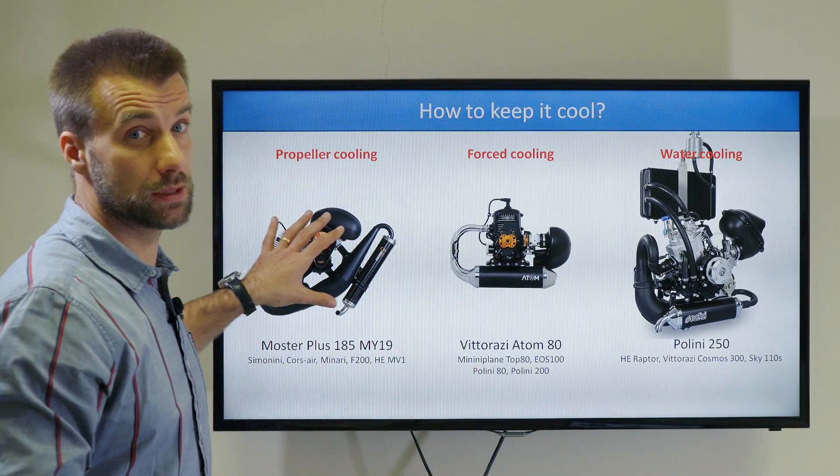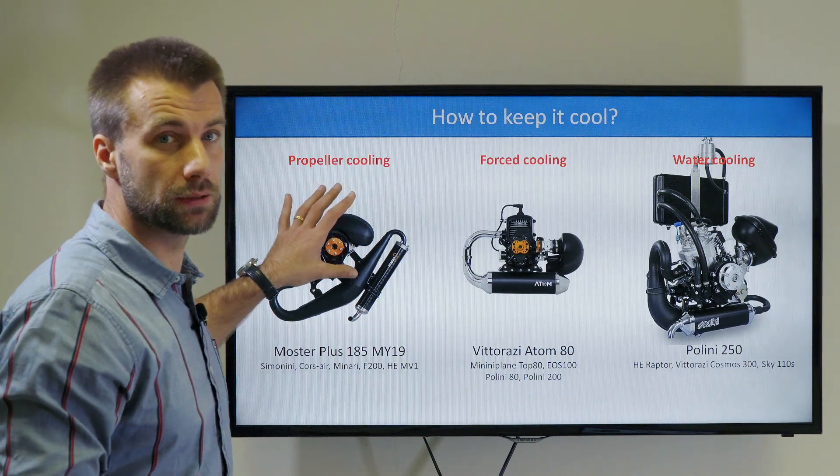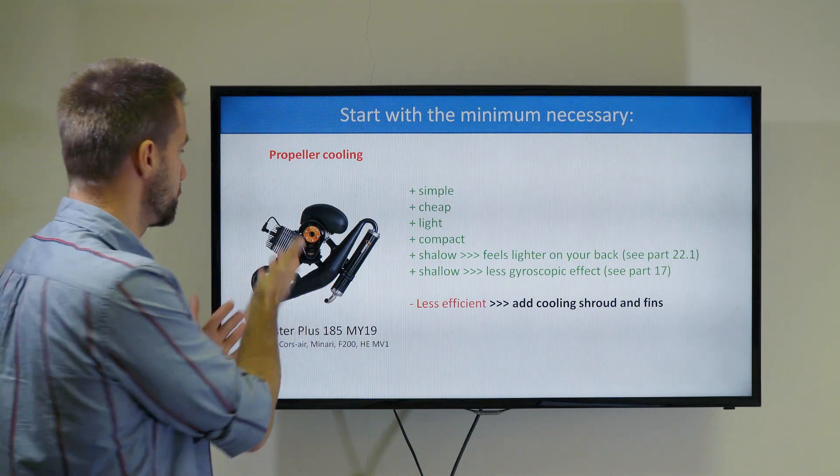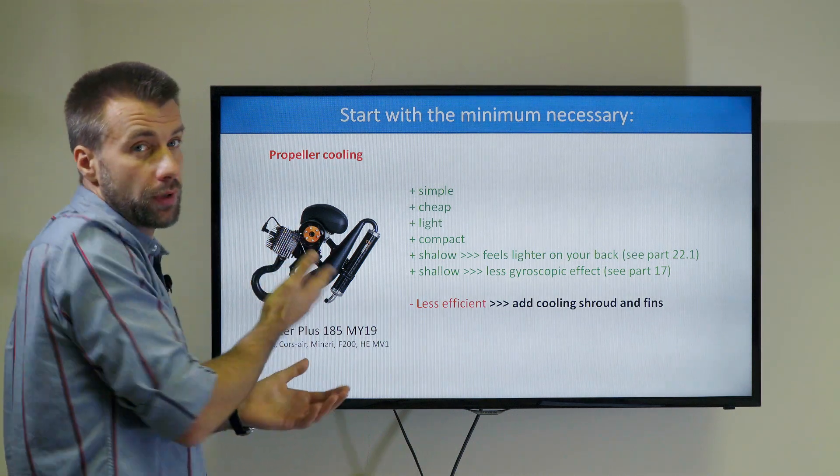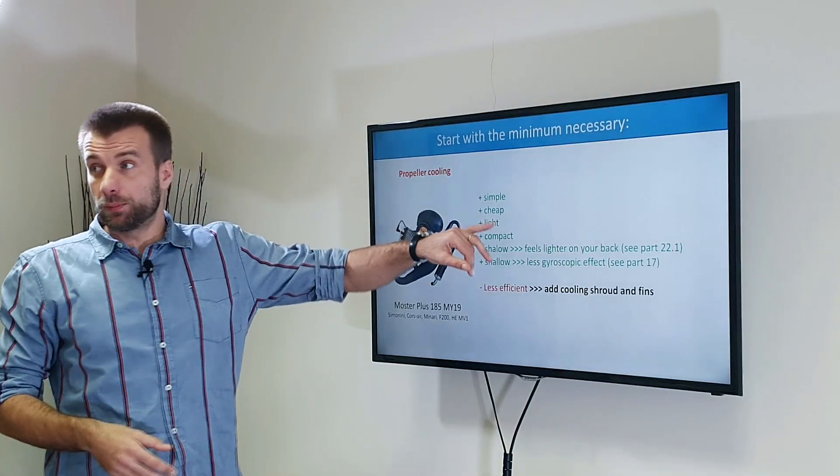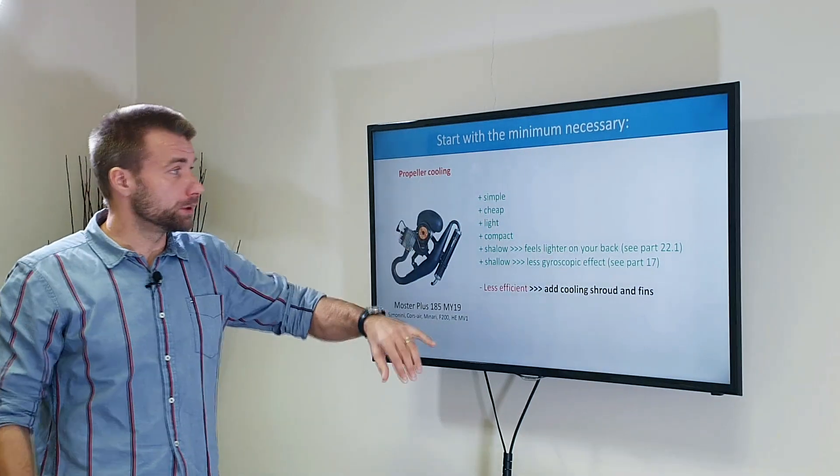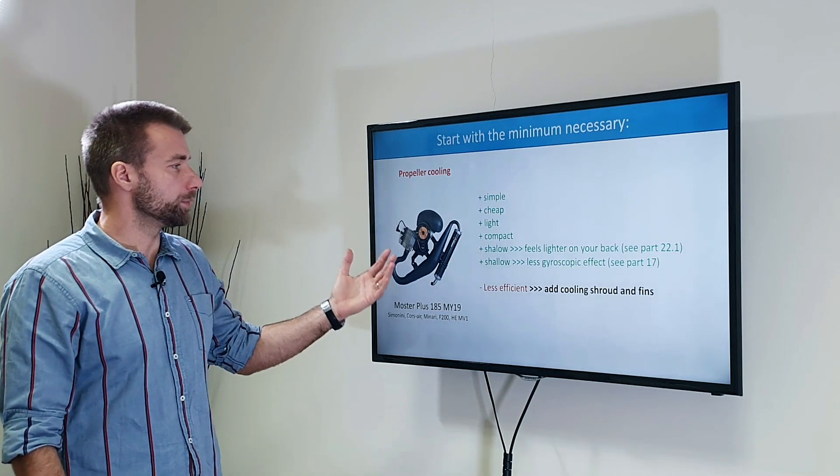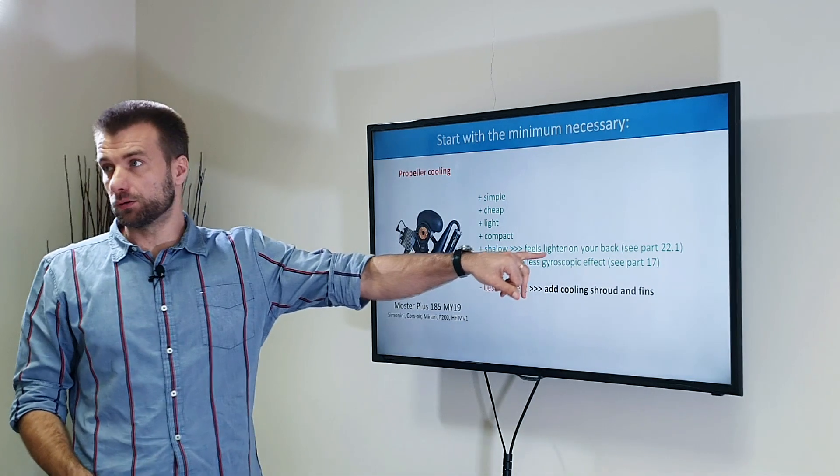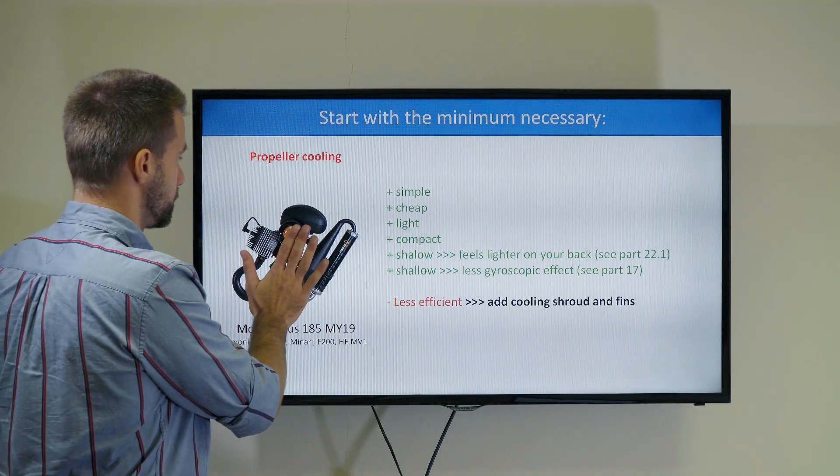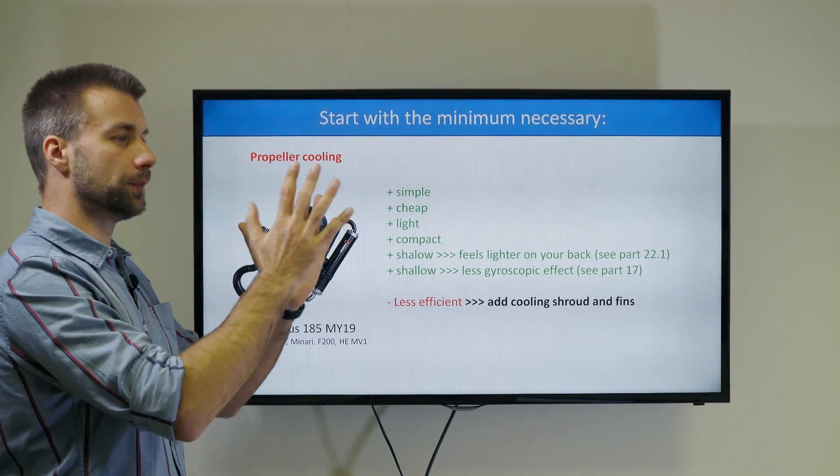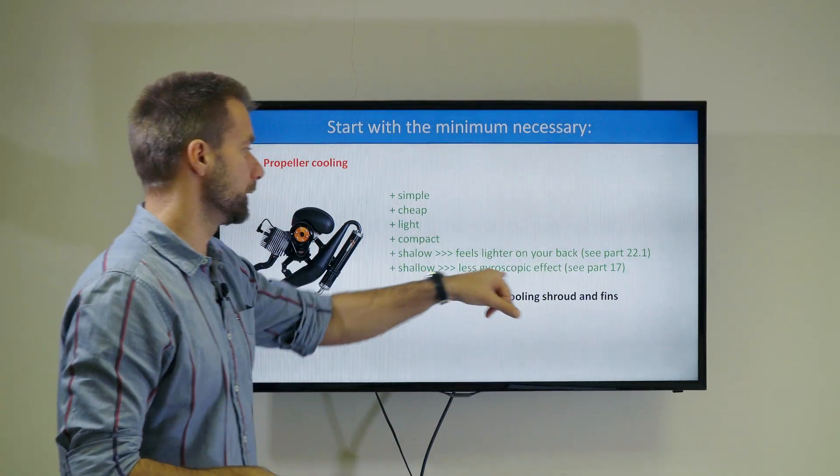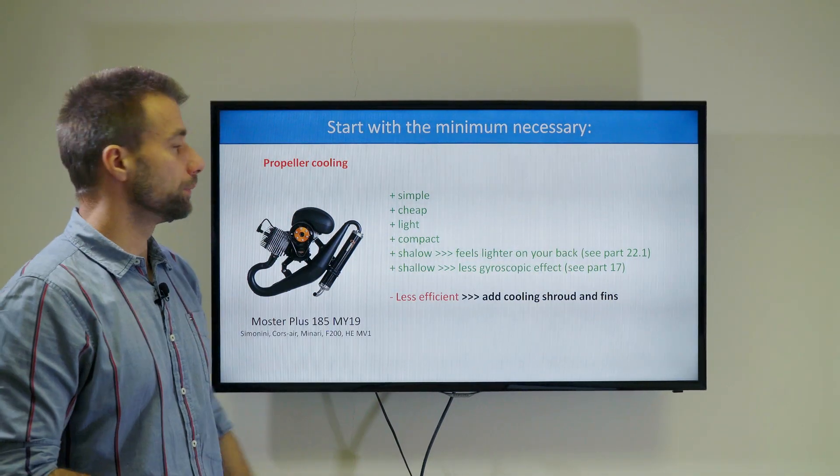And the minimum is propeller cooling. Let's get into it. Propeller cooling is very simple. There aren't any parts, just ribs that can't break. Less parts means it's cheaper, lighter, and very compact. It's very shallow because it's just the engine, the pulley in front of it. It's lighter on your back with less gyroscopic effect. Please refer to chapters 22.1 and 17 of this geometry classroom.